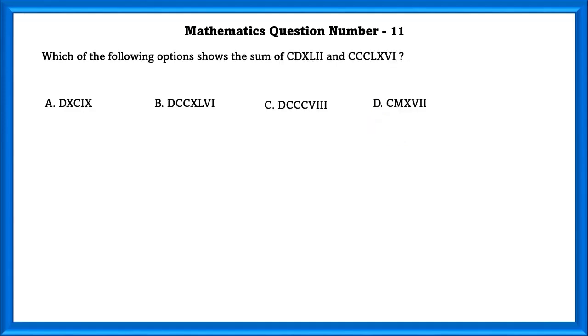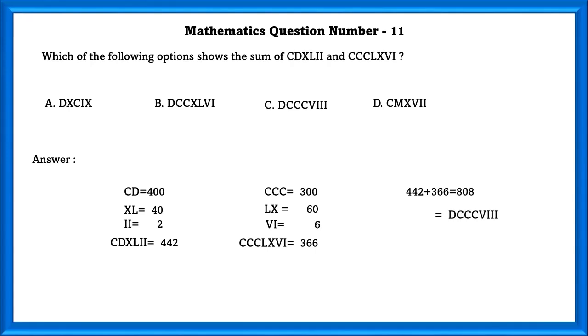Mathematics Question Number 11: Which of the following options shows the sum of these Roman numerals? CD is equal to 400, XL is equal to 40 and II is equal to 2, which leads us to 442. In the second numeral, CCC is equal to 300, LX is equal to 60, VI is equal to 6, which leads us to 366. If we add these, we will get 808, which is equal to the C option.